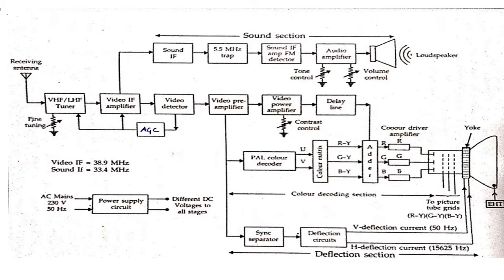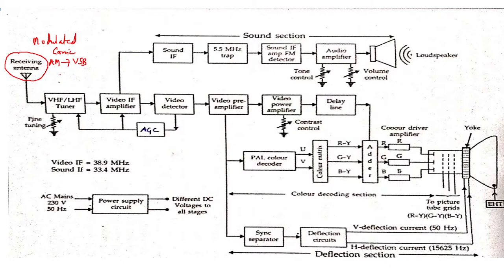Looking at the block diagram of the PAL Color Receiver, the first component is the Receiving Antenna, which receives the modulated carrier. That carrier consists of a video signal modulating the carrier using amplitude modulation, following vestigial sideband — that is, the upper sideband plus a part of the lower sideband. The sound signal follows frequency modulation. Both are combined and received by the receiving antenna.